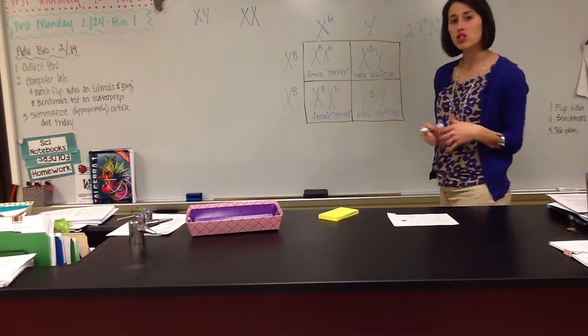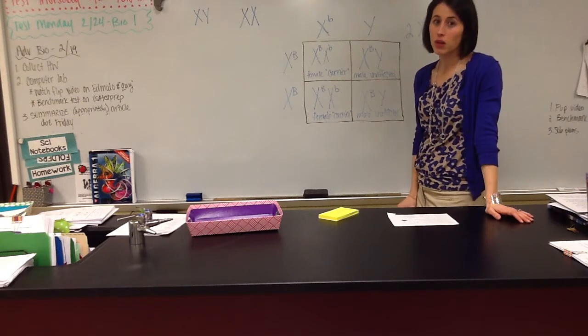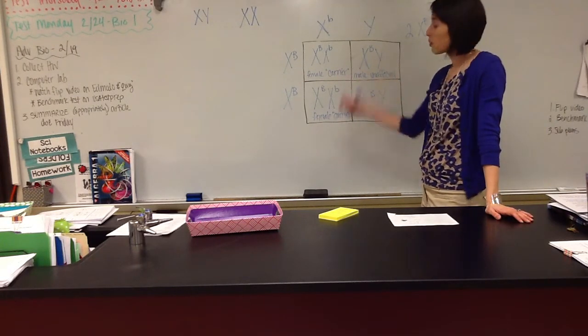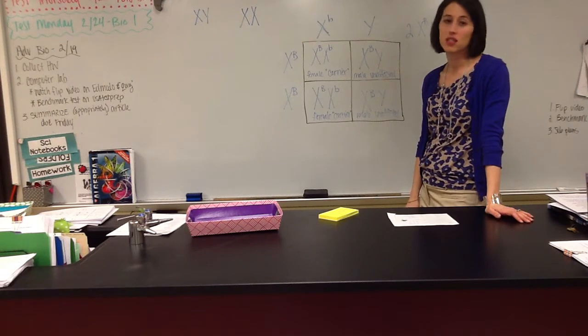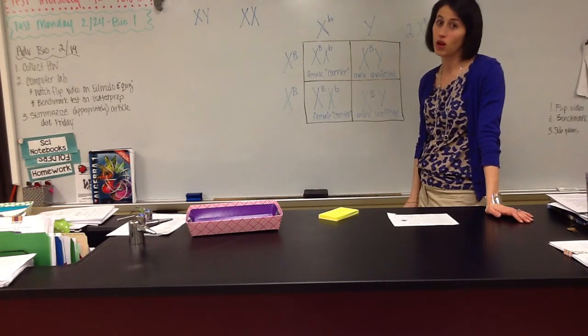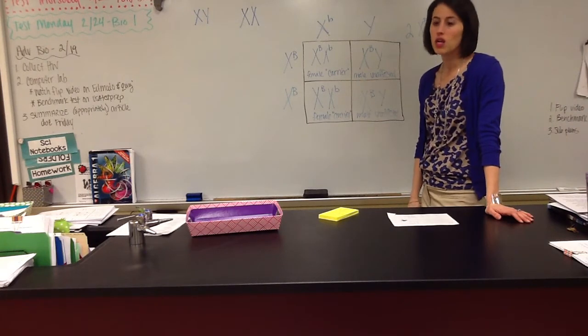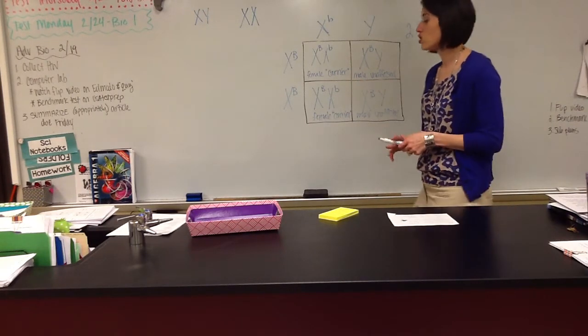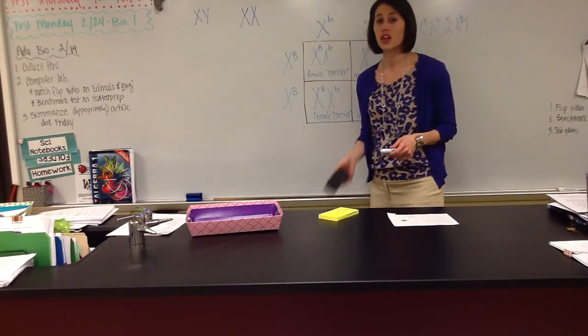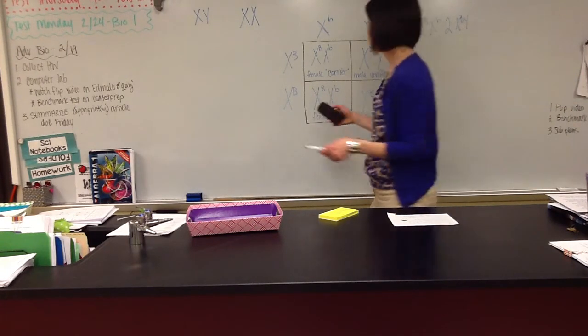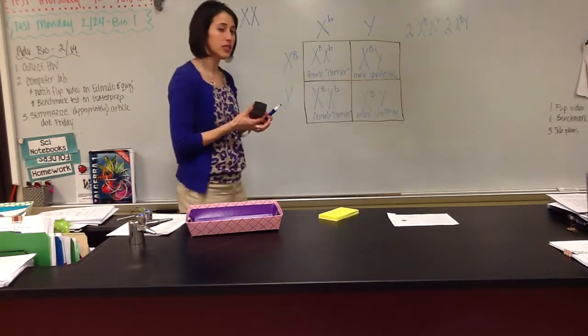So if I asked you, what are the chances of my offspring being colorblind, with this Punnett square, it shows that the chances of my children being colorblind are 0%. But Kennedy is a carrier. So let's do a Punnett square showing the probability of Kennedy's offspring having that, showing that recessive trait.